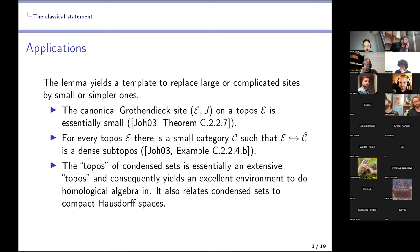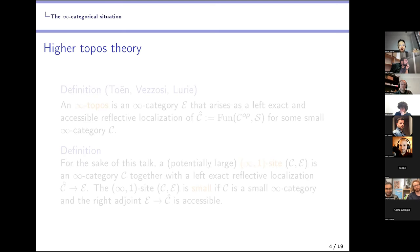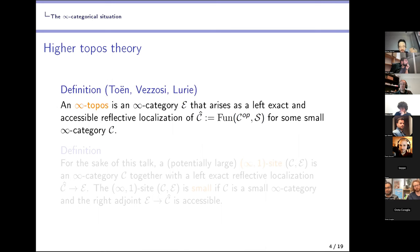Now to higher topos theory. We saw that a 1-topos is essentially the same as a left exact localization of a pre-sheaf topos, and this is the standard definition of an infinity topos.